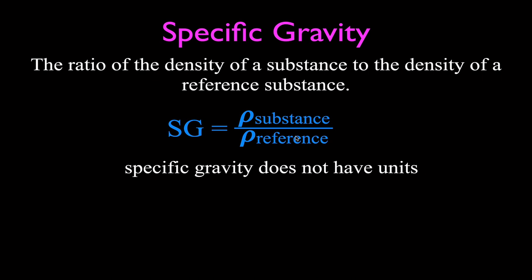Most commonly, in most books, you'll see that specific gravity is the ratio of the density of a substance to the density of water. This is often how you'll see it, but the more general form uses a reference substance — and that reference substance is oftentimes water because water is readily available. However, it does not have to be water, as I'll show you in the next slides.